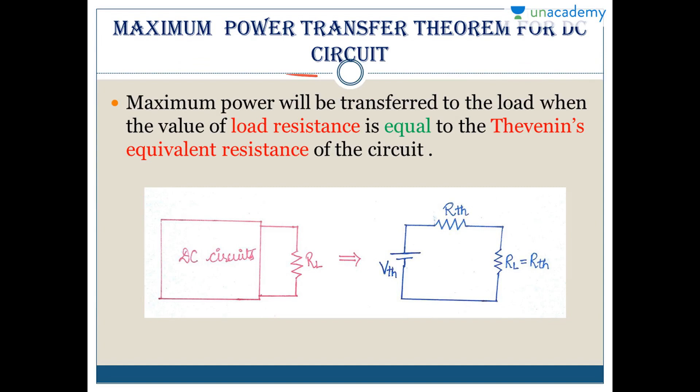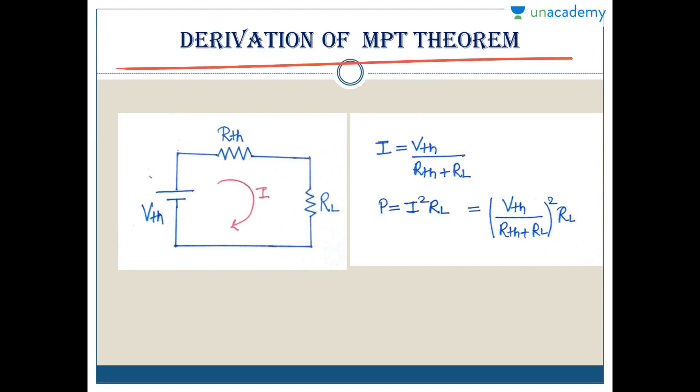Maximum power will transfer to the load when the value of load resistance equals the Thevenin equivalent resistance. This is our DC circuit - a complicated circuit with load RL. If you want to find maximum power transfer, this load resistance value should equal the Thevenin equivalent resistance RTH. So RL should equal RTH for maximum power transfer.